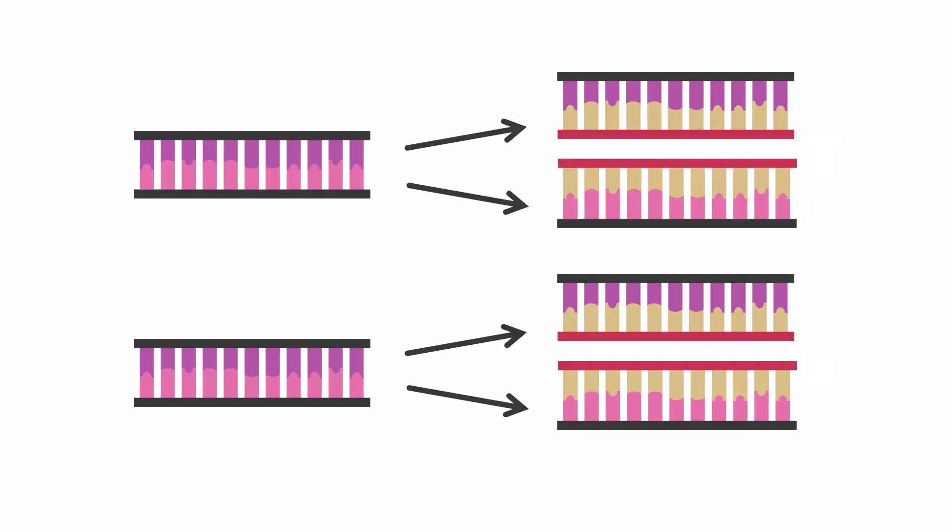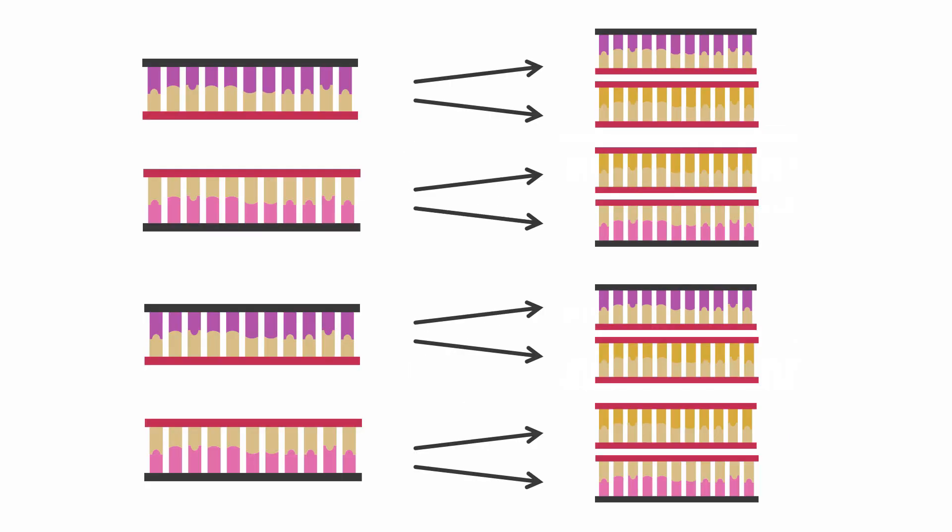These three steps, denaturation, annealing, and elongation are then repeated with the amount of DNA doubling in every cycle. So if you started with only one cDNA molecule, after just 35 cycles, you would have 2 to the power of 35 or over 34 billion identical DNA molecules.